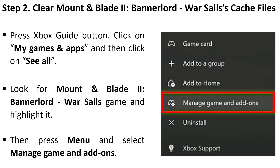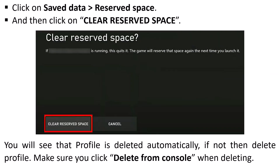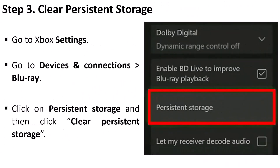Press the Xbox button, click on My Games and Apps, then click See All. Look for Mount and Blade 2: Bannerlord, highlight it, then press Menu and select Manage Game and Add-ons. Then click on Save Data Reserve Space and then click on Clear Reserve Space. You will see that the profile is deleted automatically — if not, delete the profile manually.